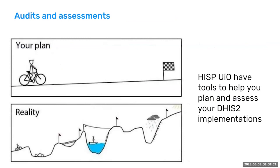I will spend a little bit of time talking about audits and assessments. Sometimes your plan looks like you want to go from A to B, you have your bike and everything is good to go, but the reality can be quite different. First of all, it's good to know — am I ready to start? Do I have everything in place? And then once you start your journey, stop at some points to see what actually happened, where am I now, what's ahead of me, and what should we plan for next? We have tools within DHIS2 to help you assess — for the quality of your implementation and your security setup.